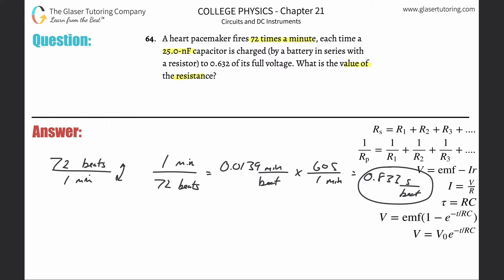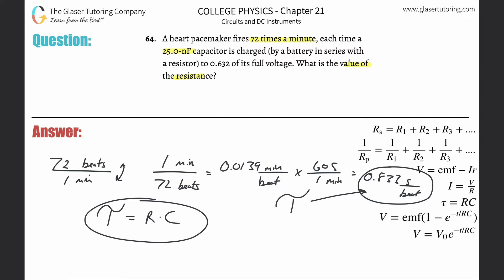If the pacemaker went off once a second, it would fire 60 times a minute. Since the period is a little less than one second, it fires more than 60 times — 72 times a minute. This period of 0.833 seconds represents the time constant tau. We know tau, we're finding resistance R, and we know capacitance C, so we use tau equals R times C.